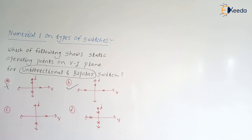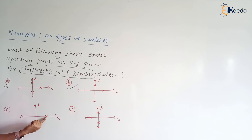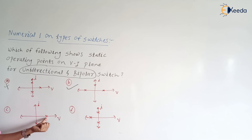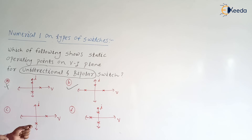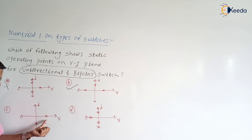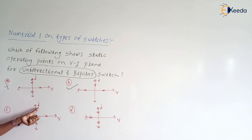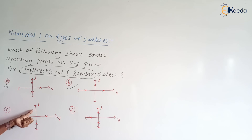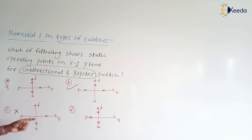Next, let us check the third option. The operating points are here. Corresponding to this point, the current is zero — the switch is in the off state — and the voltage across the switch is positive. The same point does not lie on the negative voltage side, so the switch is not able to block negative voltage. Switch is blocking only positive voltage, so it is unipolar. Corresponding to the on-state point, the switch allows current in only the negative direction, not in the positive direction. So this is unidirectional and unipolar — option C is not the correct option.